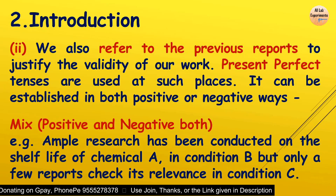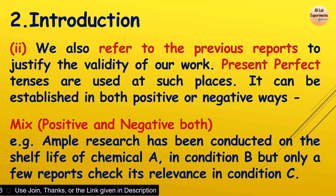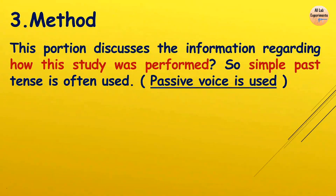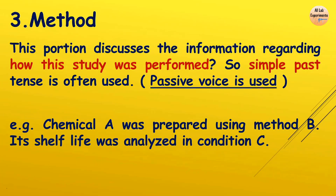So whatever the length of your introduction, there are majorly these two parts in any introduction. If you keep them in mind and write according to this frame, you can easily figure out what to write at each position. Now moving to the methods section: this portion discusses how the study was performed. Because the experiment has already been performed, simple past tense is used — and passive voice, to make it impersonal and avoid writing 'I' or 'we.' For example: 'Chemical A was prepared using method B. Its shelf life was analyzed in condition C.'